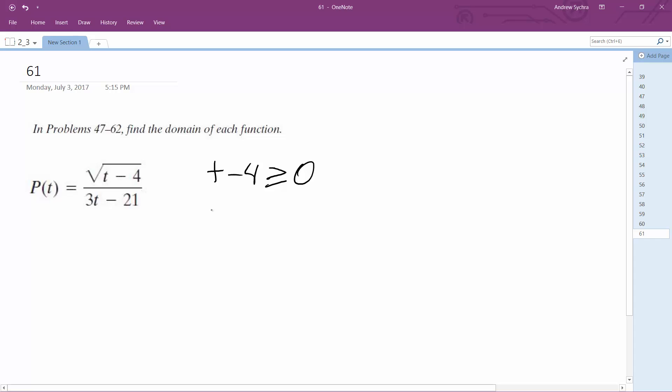We have limitations on the denominator where 3t minus 21 cannot equal 0, and then we'll have to combine the limitations. For t, t has to be greater than or equal to 4 on the top.